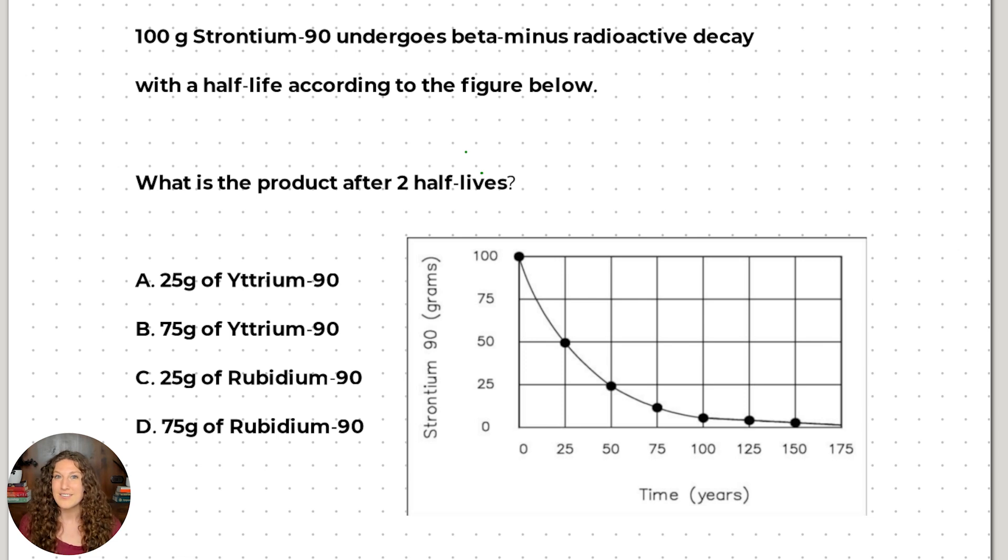Go ahead, read this question, pause the video, and give it a try on your own first. Once you've reached a stopping point come on back and we'll walk through the content and the strategy together. One hundred grams of strontium-90 undergoes beta minus radioactive decay with a half-life according to the figure below. What is the product after two half-lives? We're going to start with the types of decay.